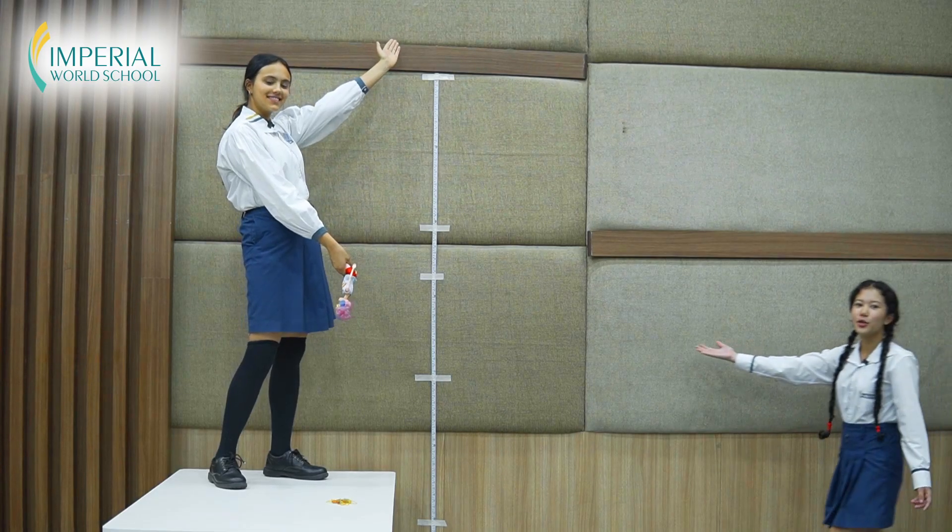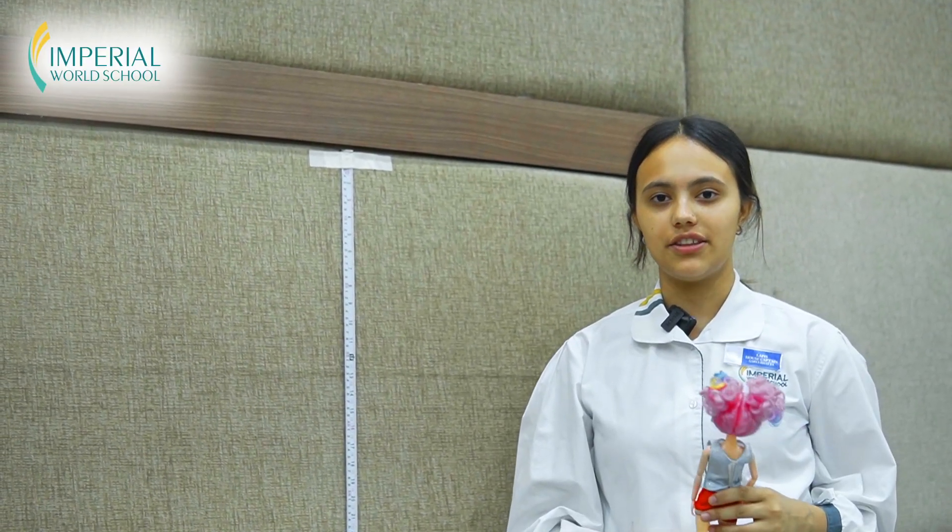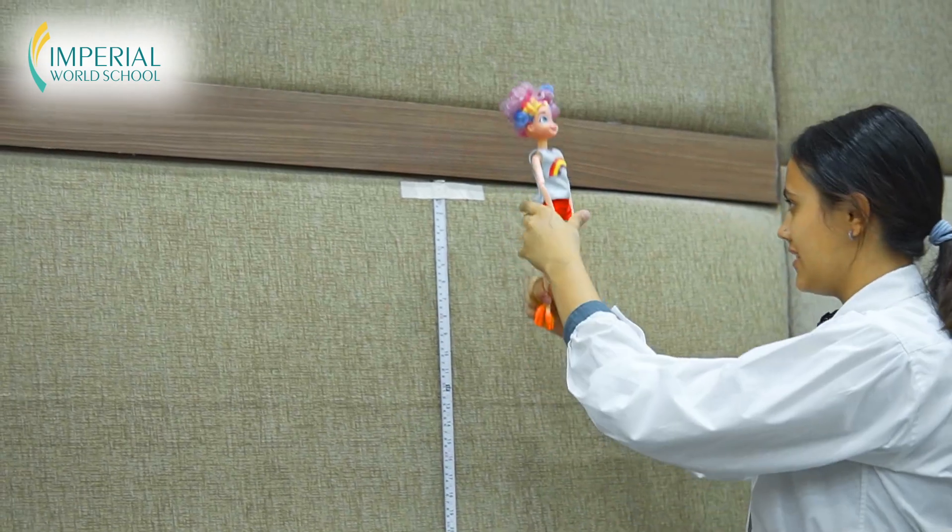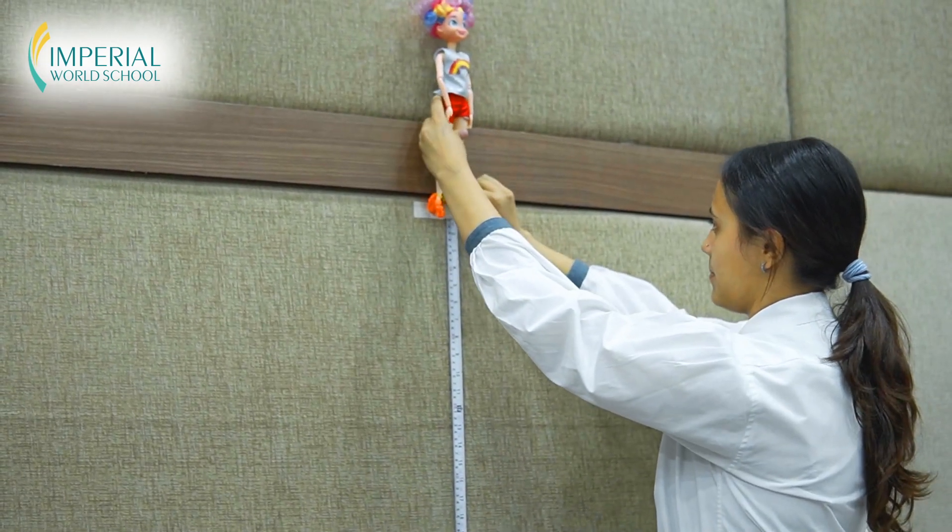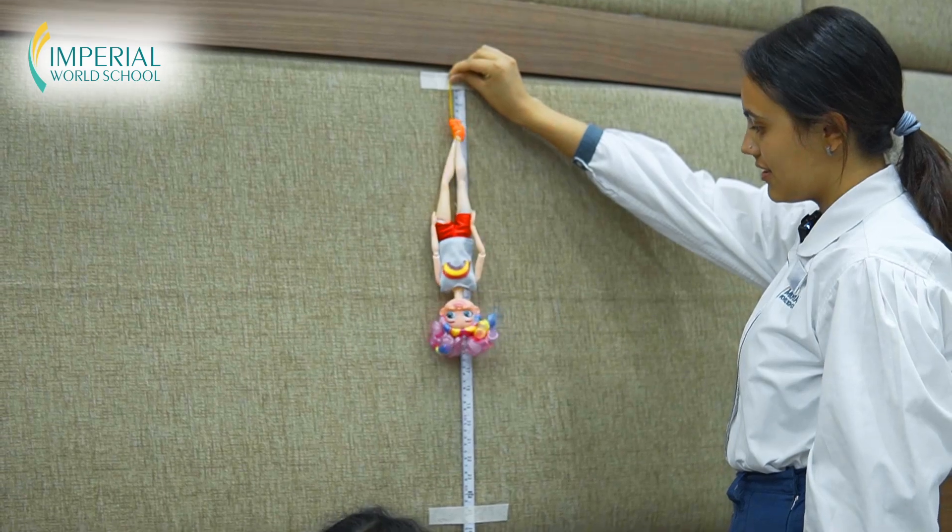So this is where we are going to perform our experiment. Firstly we are using two rubber bands to drop the Barbie and the height of the Barbie is 33 centimeters. Now we're gonna drop the Barbie. So the drop is 48 centimeters.